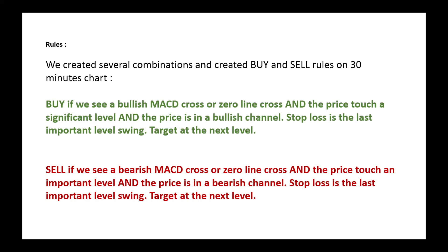For example, if you have 7,000 trades and you created 2,000 pips — that sounds excellent. But in reality, with 7,000 trades, that is more than 7,000 pips of loss from spread and commission for every single trade. So when you do real trading, on the end you will have a negative balance.